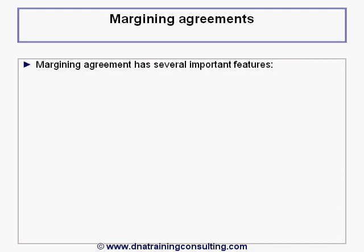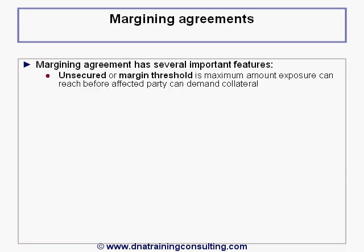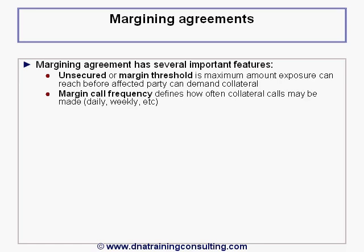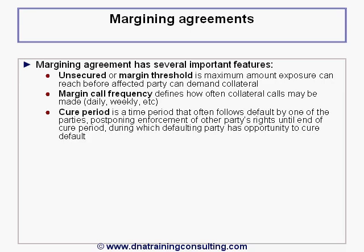A margining agreement has several important features. The unsecured, or alternatively called margin threshold, is the maximum amount an exposure can reach before the affected party can demand collateral. The margin call frequency defines how often collateral calls may be made. A cure period is a time period that often follows a default by one of the parties, postponing enforcement of the other party's rights until the end of this cure period, during which the defaulting party has the opportunity to cure or remedy the default.